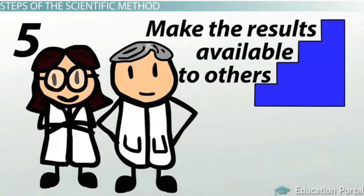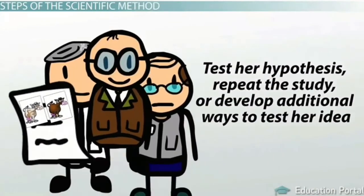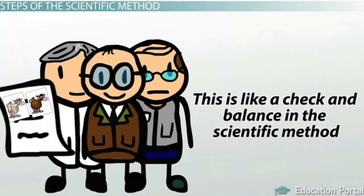Fifth, you will make the results of your research available to others. Our researcher did this by writing up a report on her findings. In the report, the researcher would have listed her findings as well as any limitations that the research may have had. This will allow other researchers to test her hypothesis, repeat the study to see if they get the same results, or develop additional ways to test her idea. This is like a check and balance in the scientific method — an important step that allows results to either be validated or proven incorrect by additional testing.